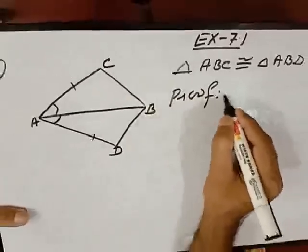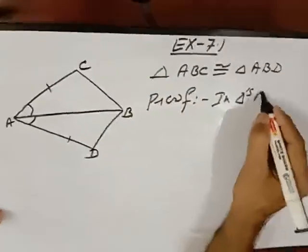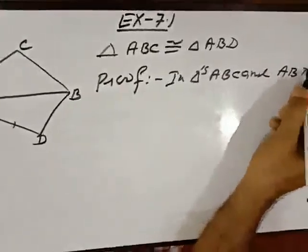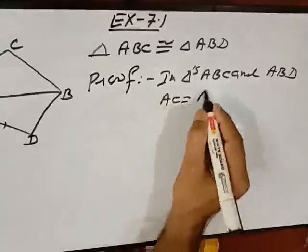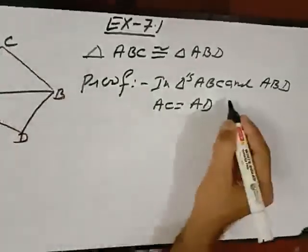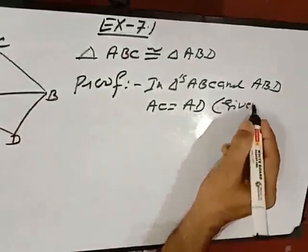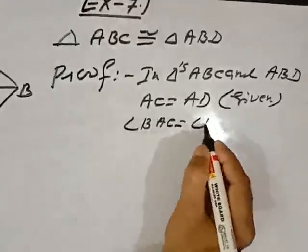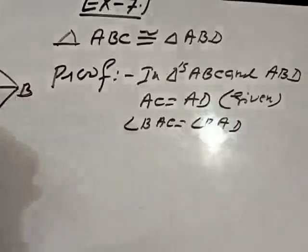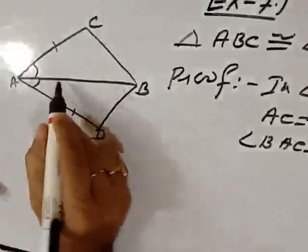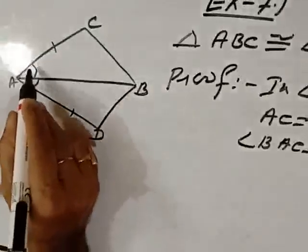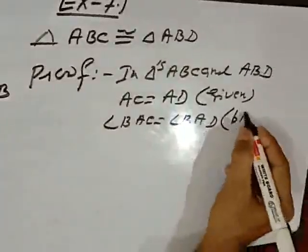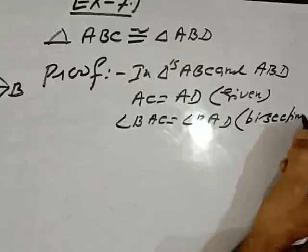In triangles ABC and ABD. What given? AC is equal to AD, it is given. And angle BAC is equal to angle BAD. Why? Because AB is a bisector of angle A. It bisects into two equal halves. So these two angles will be equal.